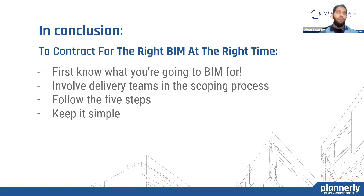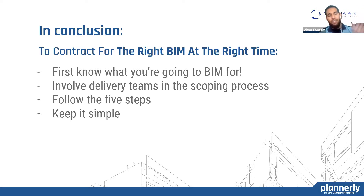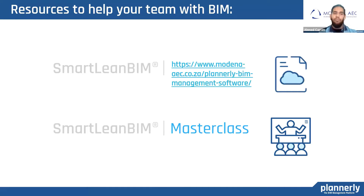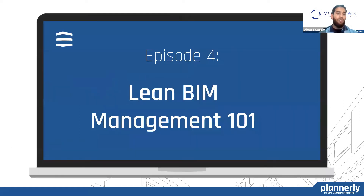In conclusion, to contract for the right BIM at the right time, you need to first know what you're going to do BIM for — what is the purpose? Then get all teams involved in the scoping process. Follow the five simple steps and answer those basic questions. And most importantly, keep it simple. Some resources: follow the link to get more information on Plannerly, and book your masterclass accreditation sessions. Remember, this is a 10-part webinar series — join us for episode four: Lean BIM Management 101. Thank you everyone for joining us today. Keep well, stay safe, and enjoy.